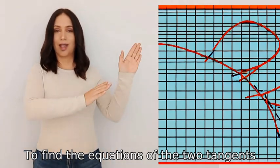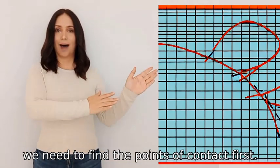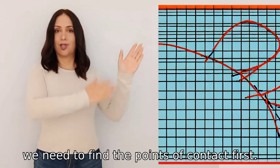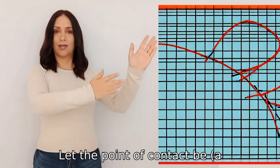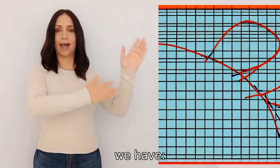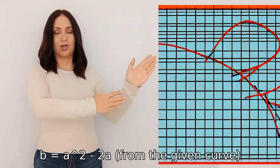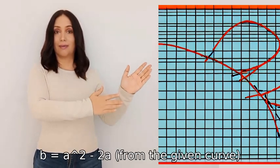To find the equations of the two tangents, we need to find the points of contact first. Let the point of contact be at (a,b). Then we have y = a, x = b from the given curve.